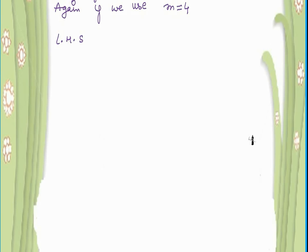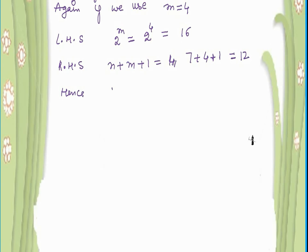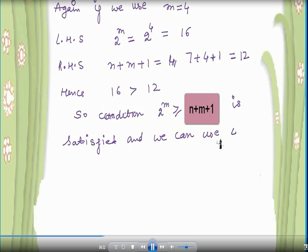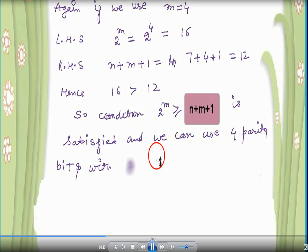If we use 4 parity bits, then 2 raised to the power 4 becomes 16. The right-hand side is 7 plus 4 plus 1, which is 12. The condition is satisfied because 16 is greater than 12. So we can use 4 parity bits with the 7 data bits.